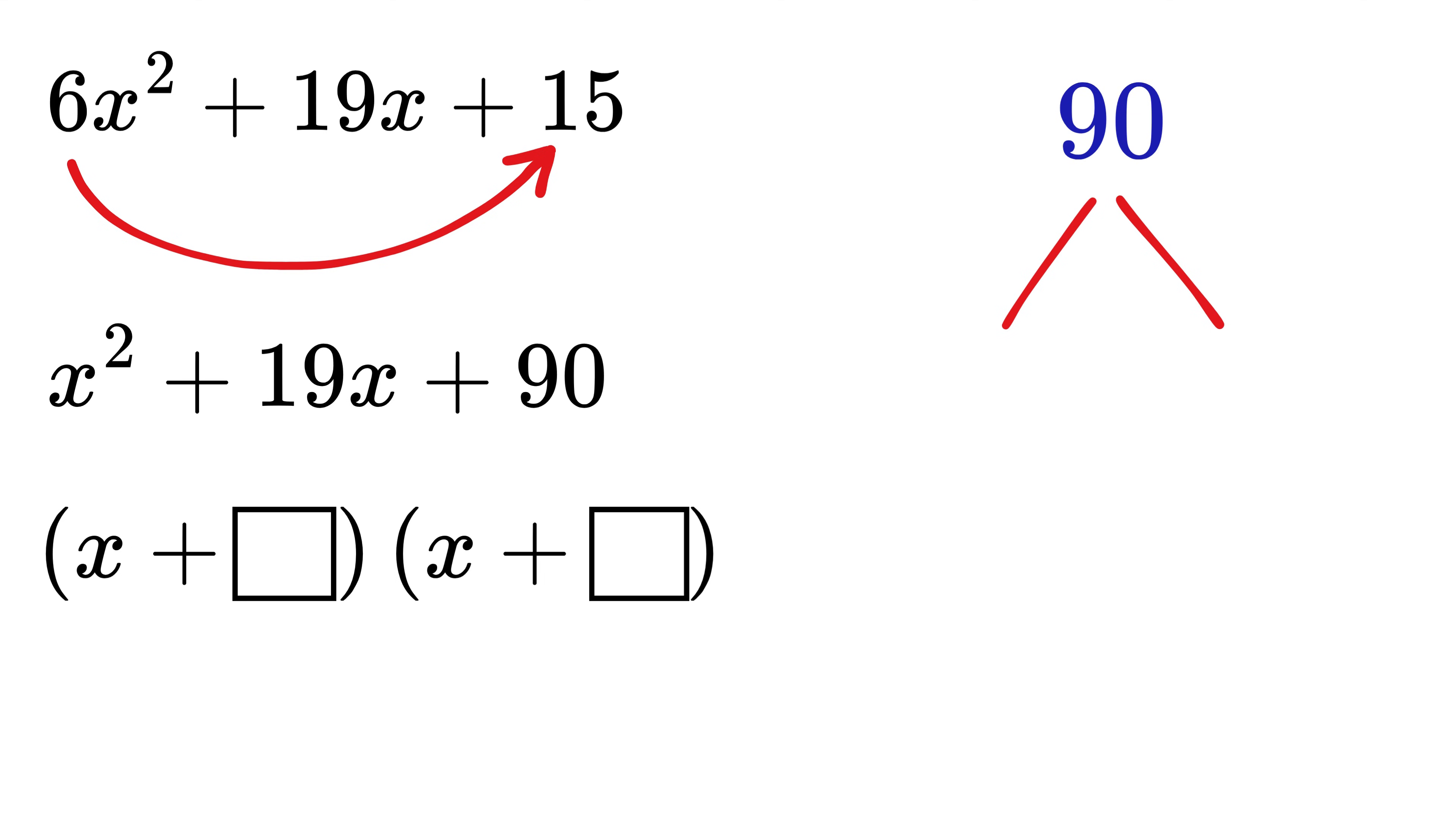The next step is to think of two numbers that multiply to 90 and add up to 19. When you check pairs like 1 and 90 or 2 and 45 or 3 and 30 and so on, none of them add to 19.